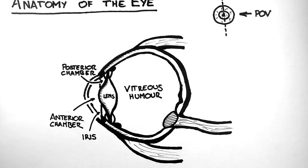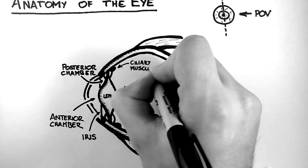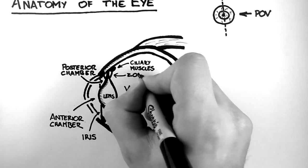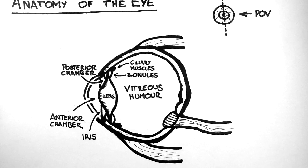Holding the lens in place, we have tiny ciliary muscles, which attach to zonules — small fibrous strands of connective tissue that attach to the lens. By contracting and relaxing, the ciliary muscles and zonules change the shape of the lens to help the eye focus.